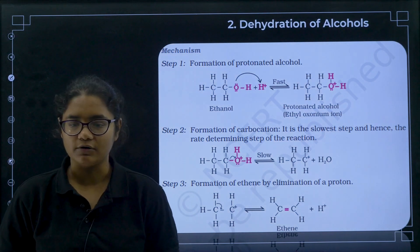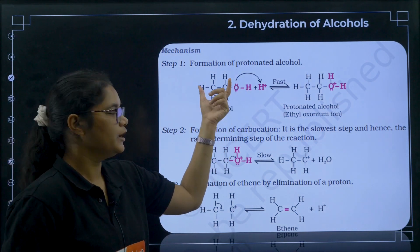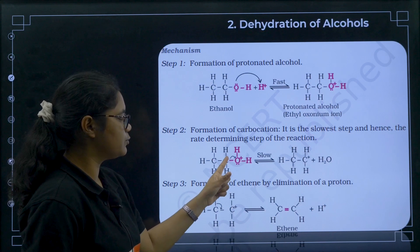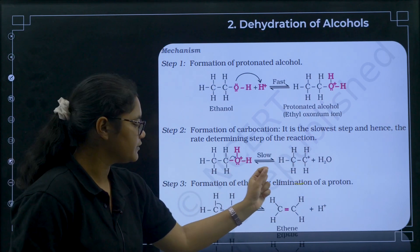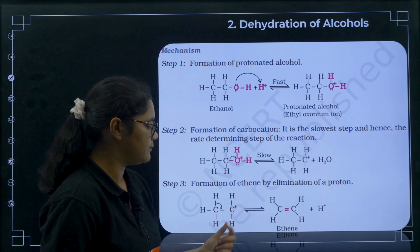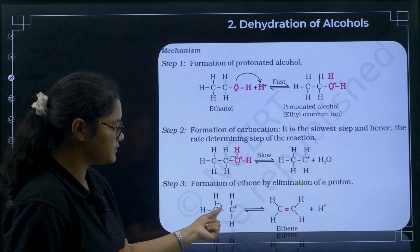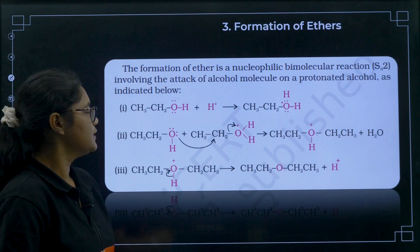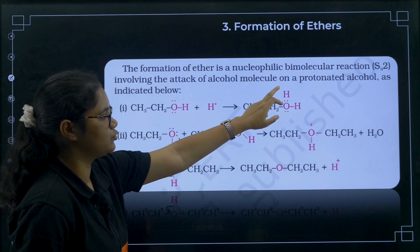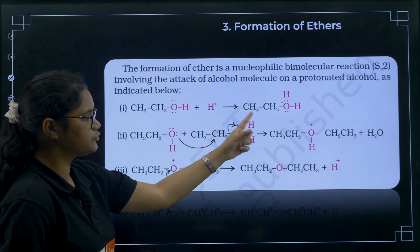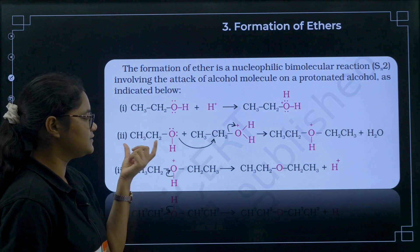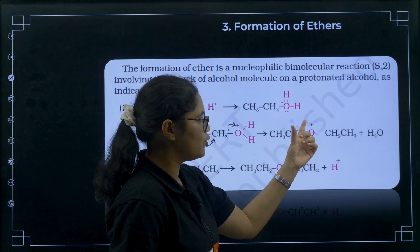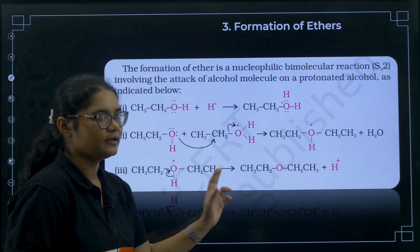The second mechanism is dehydration of alcohol. Step one: protonation of alcohol with H⁺ gives O⁺H₂. Step two: formation of carbocation — O⁺H₂ leaves. Step three: deprotonation or formation of ethene by elimination — H is removed and ethene is obtained. The third mechanism is formation of ethers from alcohol. Step one: protonation gives CH₃CH₂O⁺H₂. Step two: O⁺H₂ is removed and another ethanol molecule acts as nucleophile and attacks the electrophile. Step three: deprotonation gives the ether.